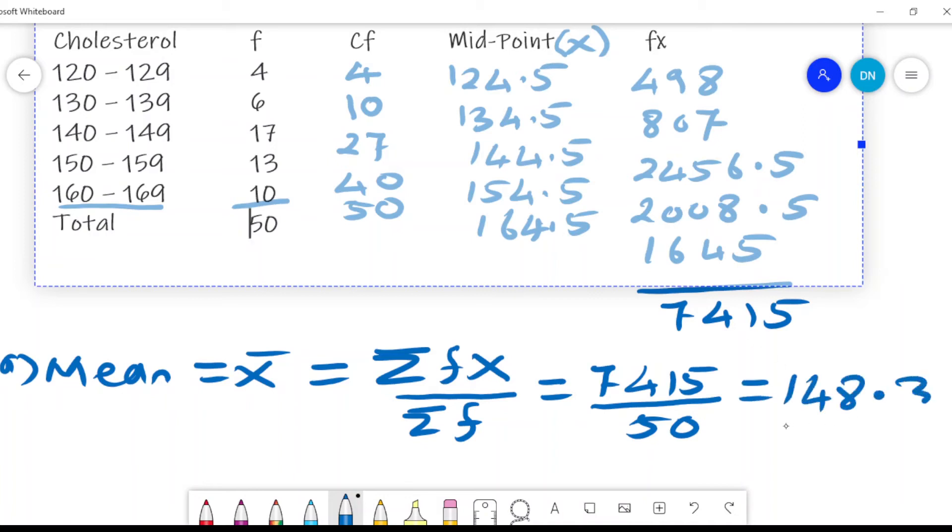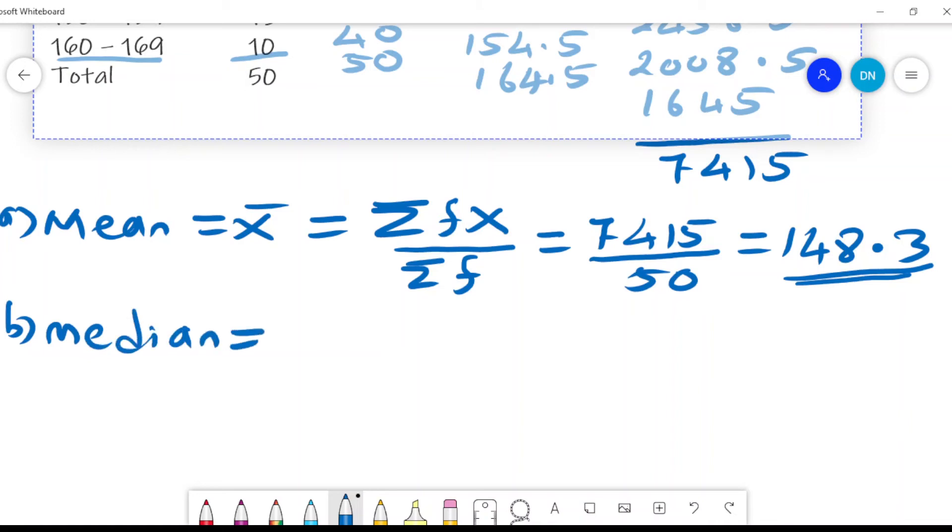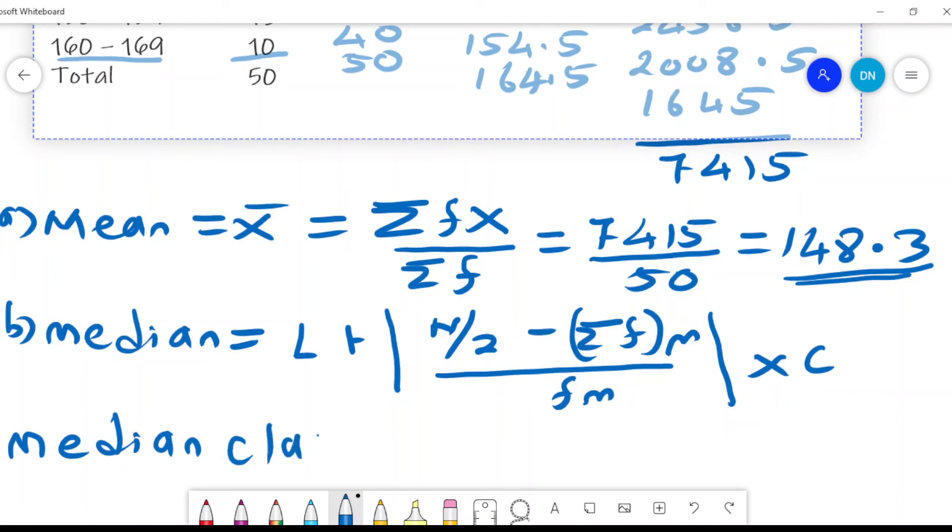So the average cholesterol levels in this group of 50 adults is 148.3. And the median, there is a formula for grouped data when you are dealing with the median. It's given by L plus N over 2 minus the sum of the frequencies of the median divided by the frequency of the median times C. So what are these? The first thing is we need to be able to get the median class so that you understand this. Now, what is our median class? Is it the class at the center? No, not exactly. It is the person, the median person, which class did that person fall.